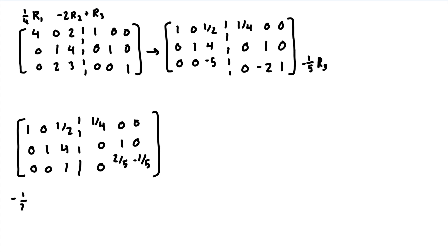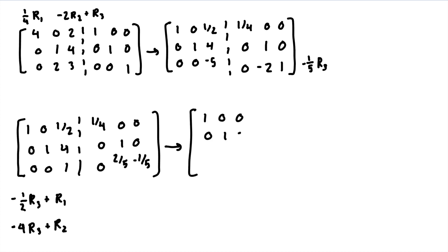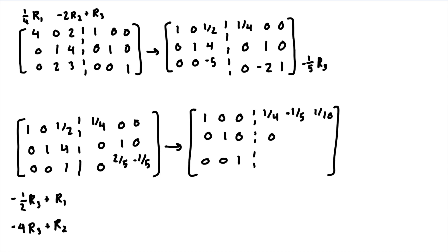Now we multiply the third row by negative 1/2 and add it to the first row, then multiply the third row by negative 4 and add it to the second row. The left matrix becomes the identity matrix: 1, 0, 0 / 0, 1, 0 / 0, 0, 1. On the right side, the first row becomes 1/4, negative 1/5 (which is 2/5 times negative 1/2), and 1/10 (which is negative 1/5 times negative 1/2). The second row becomes 0, negative 3/5 (since 2/5 times negative 4 is negative 8/5 plus 1 is negative 3/5), and 4/5 (negative 1/5 times negative 4). The third row stays the same.